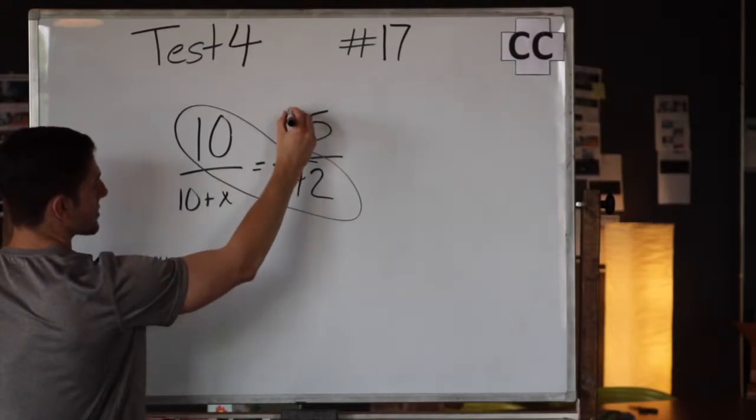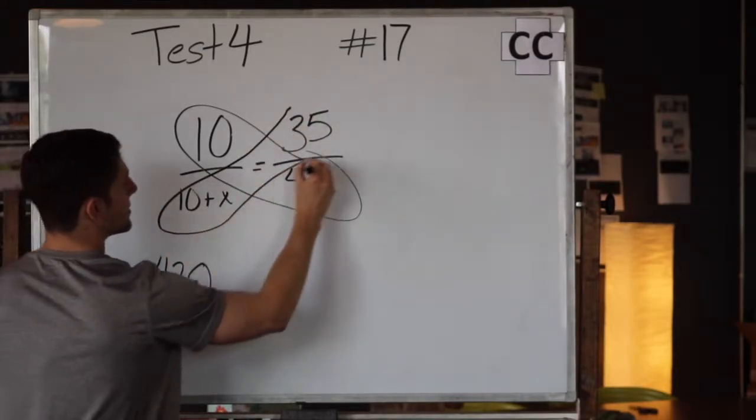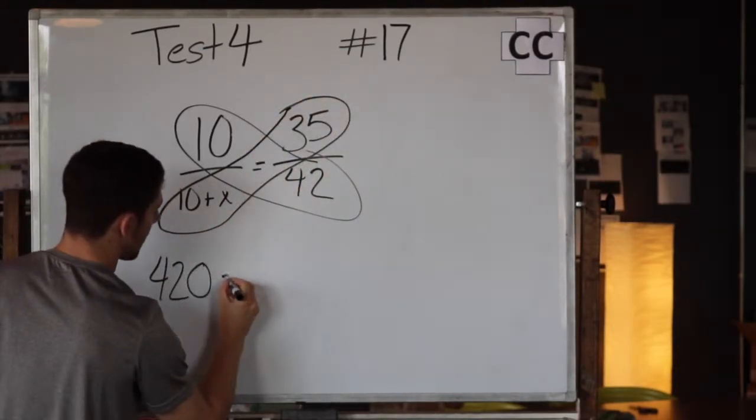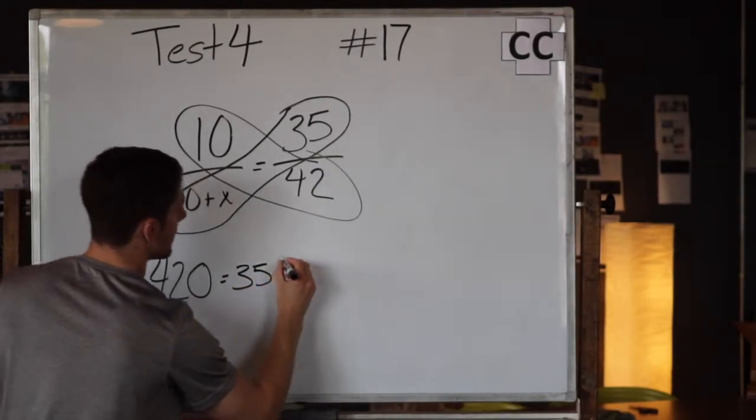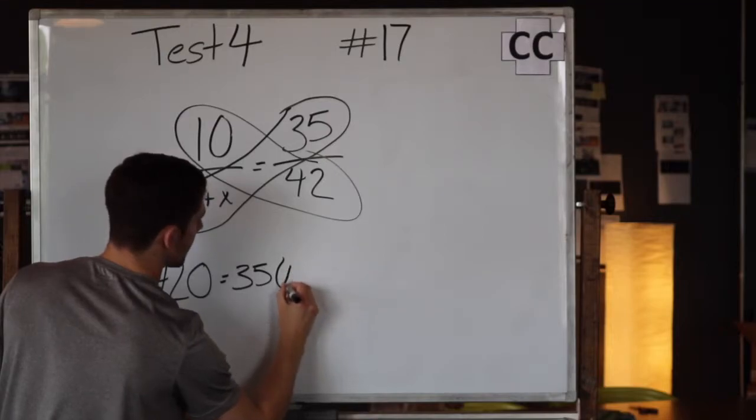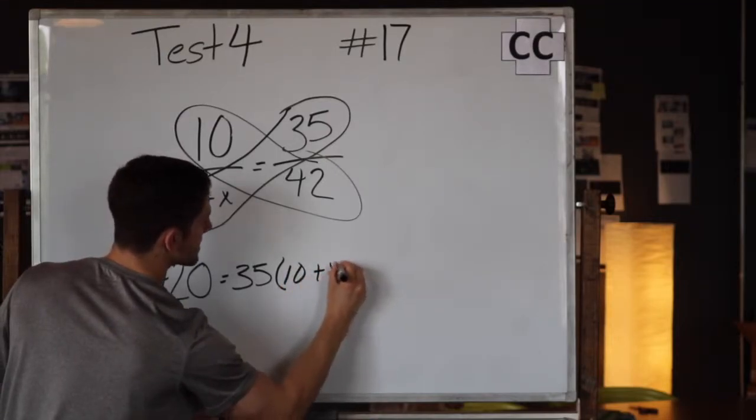And we're going to cross multiply these two, so we're going to go 35 multiplied by this expression here, which is 10 plus x.